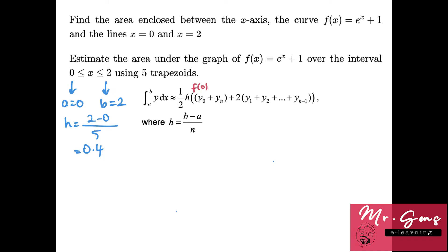So y₀ will be f(0), yₙ will be f(2), and all the other y's will increase by 0.4: 0.4, 0.8, 1.2, and 1.6. So let's write the formula.